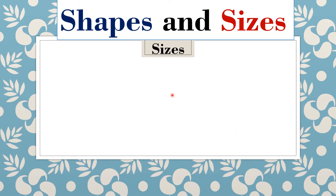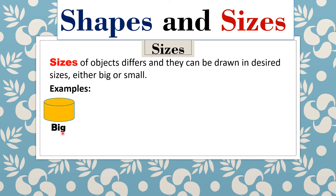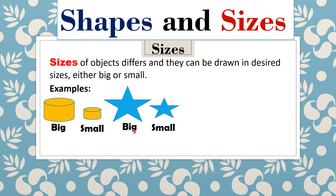Let's now look into sizes. Sizes of objects differ and they can be drawn in desired sizes, either big or small. 'Desired' simply means how you wish your shape to be — either big or small. For example: big cylinder, small cylinder, big star, small star, big parallelogram.